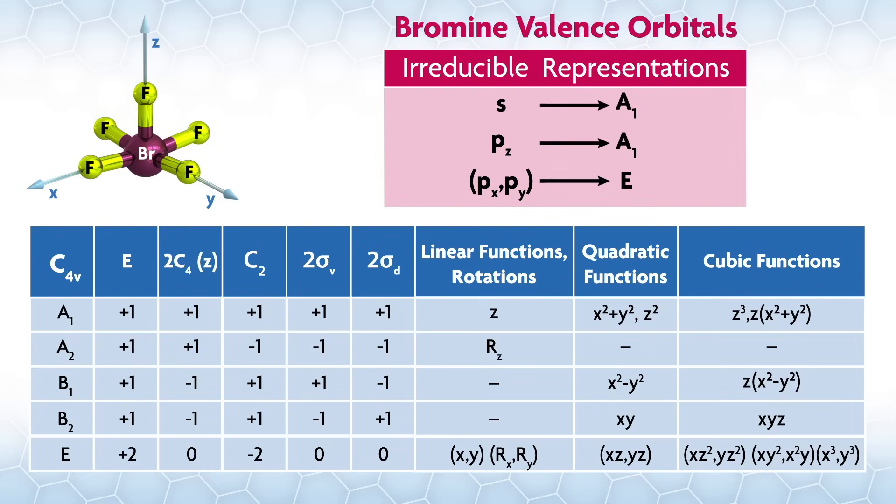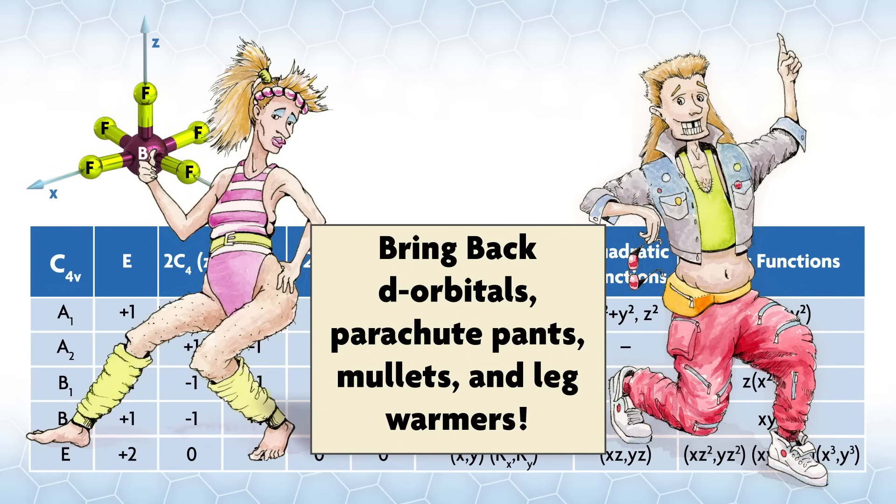For every main group element, like bromine, we only have one s orbital and three p orbitals in the valence set. There was a time when chemists proposed that the heavier main group elements could access d orbitals, but scientists working in the field threw that idea out in the 80s with parachute pants, mullets, and leg warmers. Any of those things are more likely to make a comeback than d orbitals in the main group bonding.